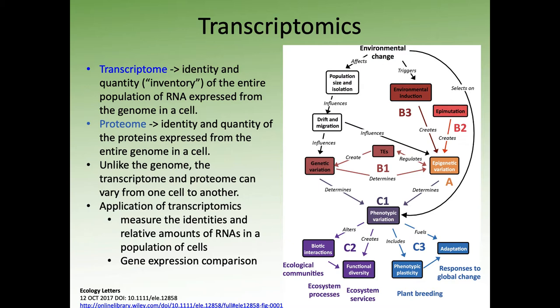Unlike the genome, the transcriptome and proteome can vary dramatically from one cell to another. Every cell essentially has the same genome — obviously some are lacking nuclei, which might be different — but everyone has the same genome in every cell. However, the genes that are expressed and the proteins that are made can vary dramatically. Transcriptomics has been widely applied across genomic-associated fields to measure the identities and relative amounts of RNAs in a population of cells.